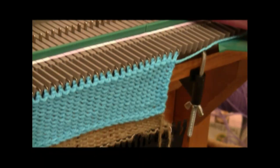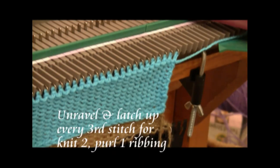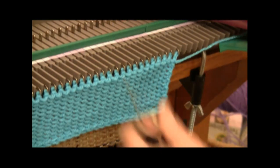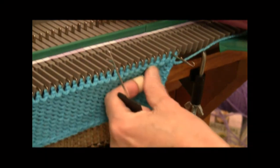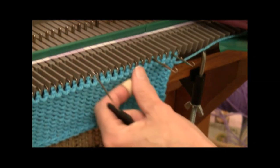Now that my 12 rows are knitted, to make the ribbing, I am going to unravel and latch up every third needle, starting with the second needle. So I'll bring it out to hold, and then skip two needles and bring one out.